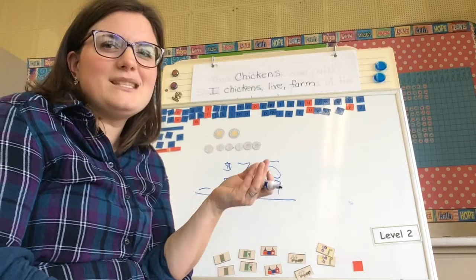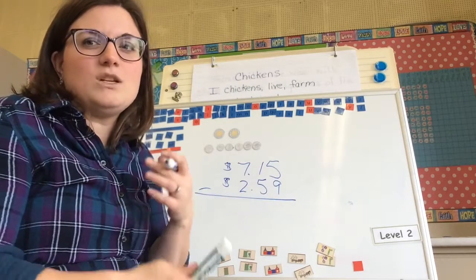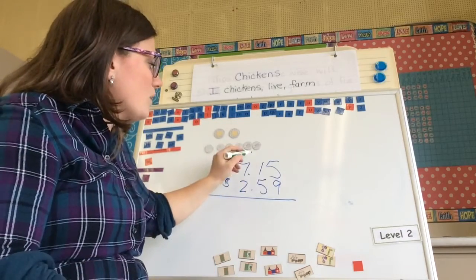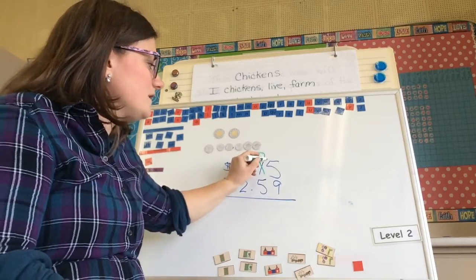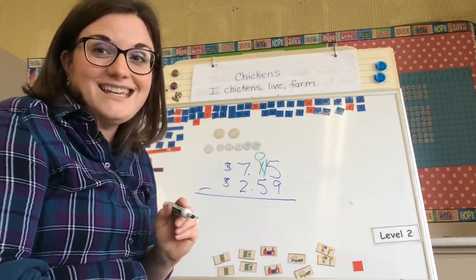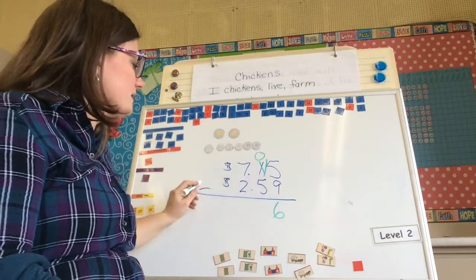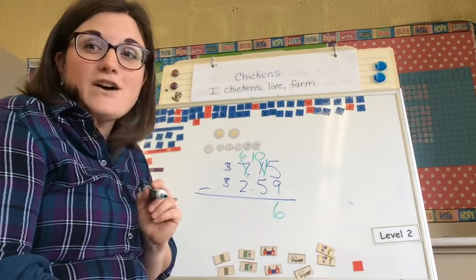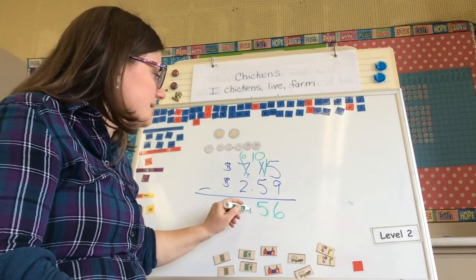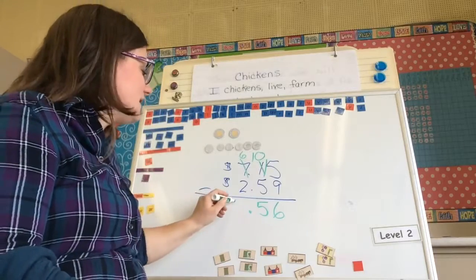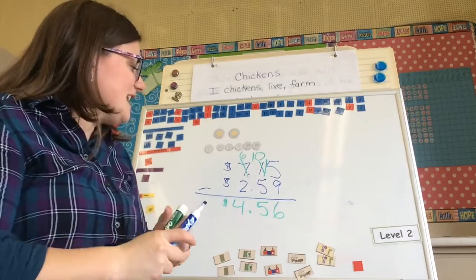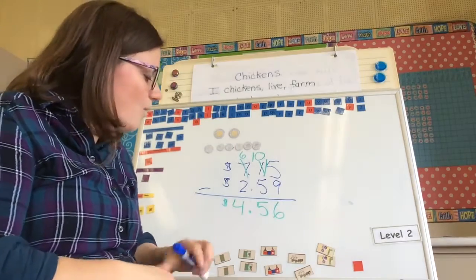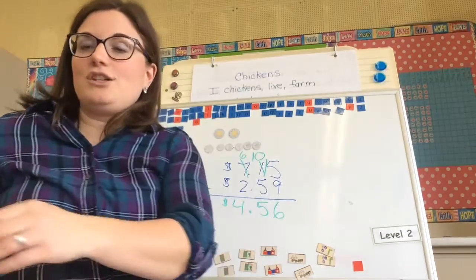If you are ever thinking you can't do this mentally, you can always stack them. So 5 take away 9 — I can't do that, I need more ones. So I'm going to trade in one of my tens and I'd have 0 tens left. If I add a 10 to my 5, I'd have 15 take away 9 equals 6. I have 0 take away 5 now, so I'm going to cross my 7 out and write a 6. Now I'd have 10 cents take away 5 cents, which gives me 5. Then 6 take away 2 is going to leave me with $4.56.